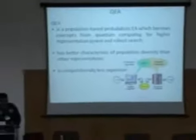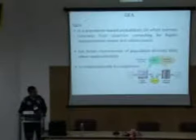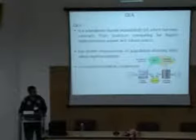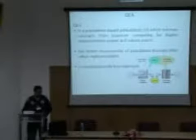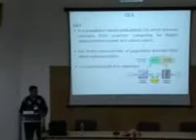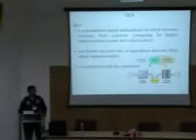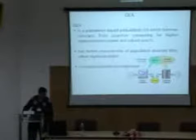Quantum evolutionary algorithms are still population-based probabilistic evolutionary algorithms, but they borrow concepts from quantum computing for higher representation power and robust search. Higher representation power gives you greater population diversity, tackling the premature convergence problem. Because of higher representation power, you can work with smaller populations than those used in classical evolutionary algorithms. Typical EA populations are on the order of a few hundreds, and typical iterations for hard problems are on the order of a million — so there's a lot of computation required.